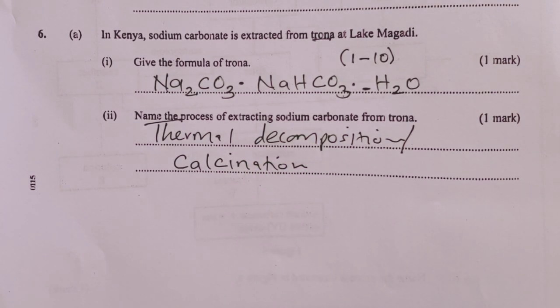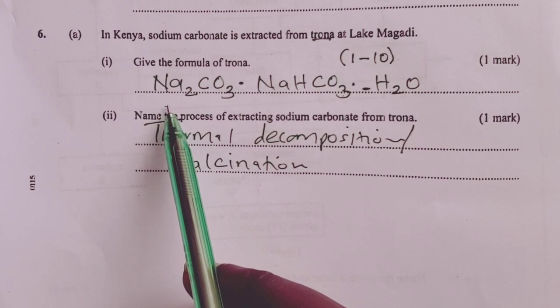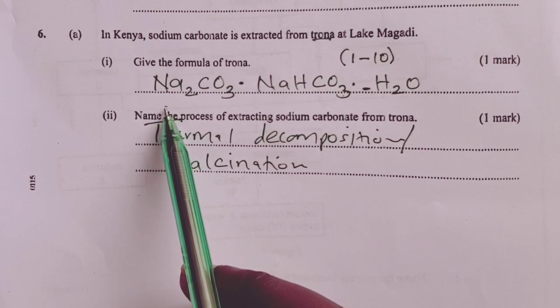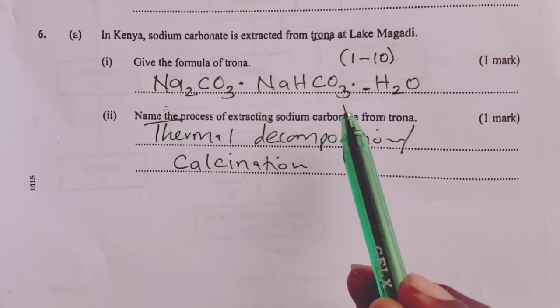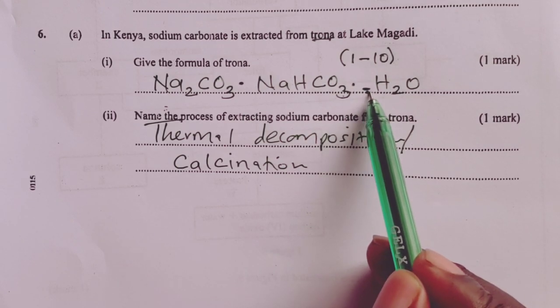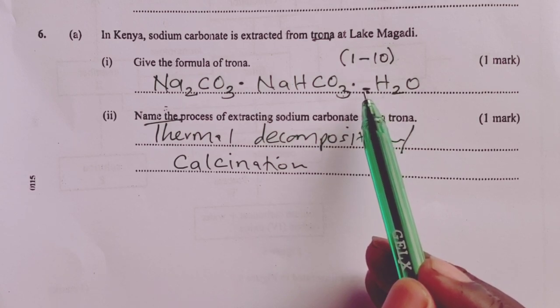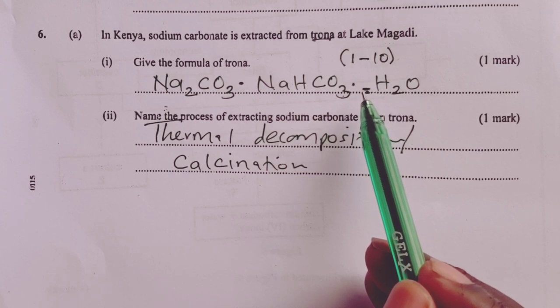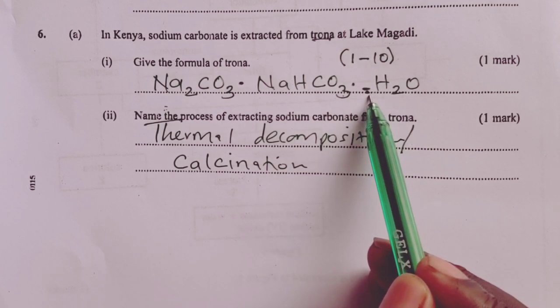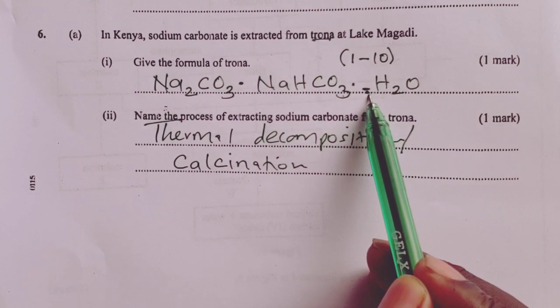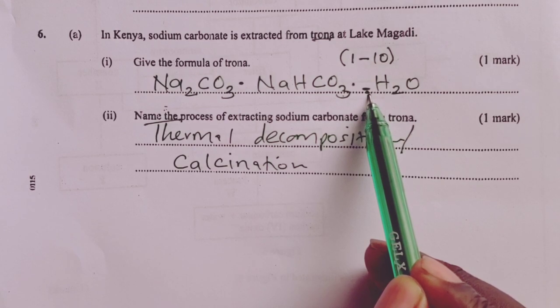We proceed to the other parts of question 6. Before we do so, I want to take you back to the formula of trona. Here, where it is a practice by most of our candidates to put the number of moles of water of crystallization here to be X, meaning that they are not sure of the exact number of moles of water. X here will not be acceptable. So moving forward, we are advising our students to be sure of the number of moles of water of crystallization for any hydrated salt. Putting X here will not help in any way.